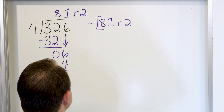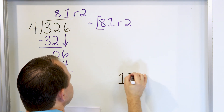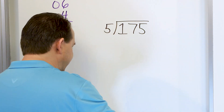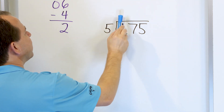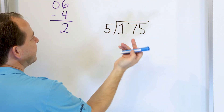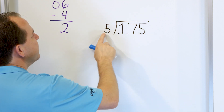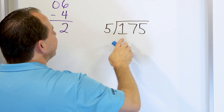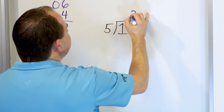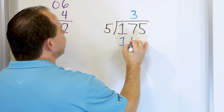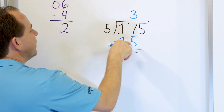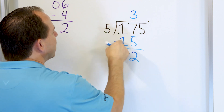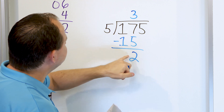Problem number 2: we have 175 divided by 5. First digit — 5 times 1 is 5, that's already too big, so I can't divide into the first digit. So let's consider 17. 5 times 2 is 10, 5 times 3 is 15, 5 times 4 is 20 — that's too big. So it's 5 times 3 is 15. Multiply 5 times 3, get 15, and subtract. 17 minus 15 is 2.